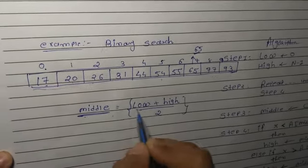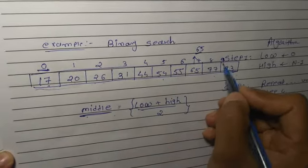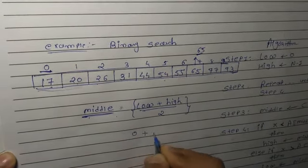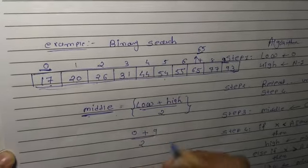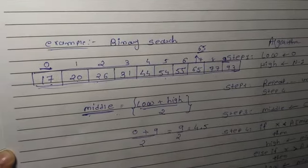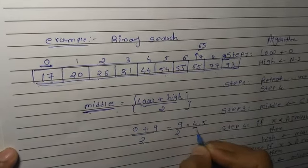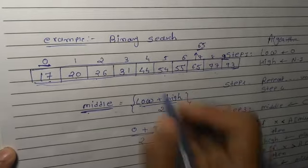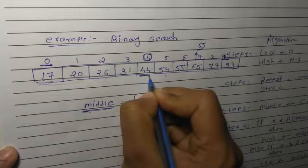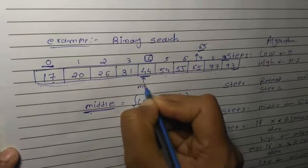The low position is 0 and the high position is 9. So here we calculate: (0 + 9) / 2 = 9 / 2 = 4.5. From 4.5, we take 4 as the middle. So at position number 4, what data do we find? 44. So our middle data becomes 44.